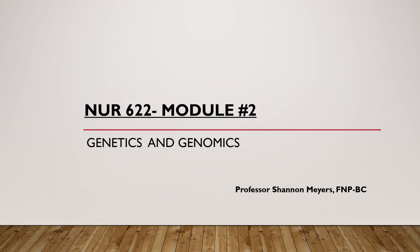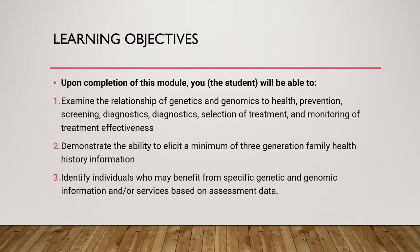This is Nursing 622, Module 2 on Genetics and Genomics. Your objectives are to determine the relationship between genetics and genomics for health prevention, screening, diagnostics, selection of treatment, and monitoring of treatment effectiveness. Also, your ability to elicit a minimum of three generations of family health history for individuals who can benefit from information, testing, and assessment.